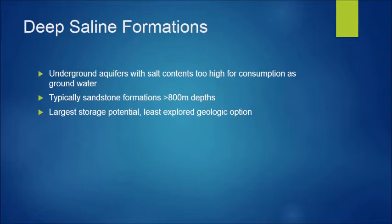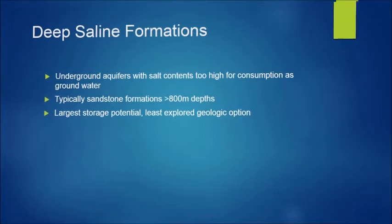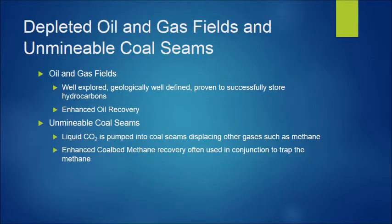Depleted oil and gas fields are probably the easiest option for rapid deployment of CO2 storage. They are well-defined and well-studied geologically, and have proven able to store hydrocarbon compounds for millions of years. Some of these fields would probably become active mining operations again through enhanced oil recovery. Oil fields are estimated to be able to store approximately 33 billion metric tons of CO2. Unminable coal seams have also been looked at as storage locations for carbon dioxide because they displace the methane gas trapped inside the coal, resulting in enhanced coal bed methane recovery.